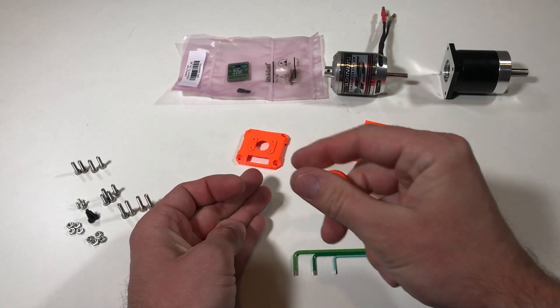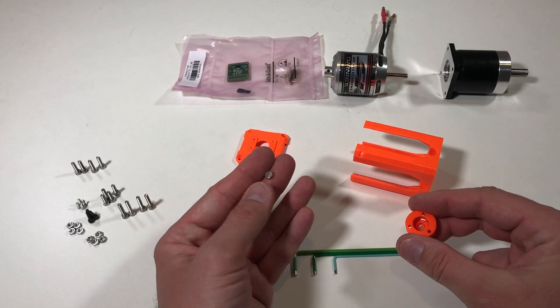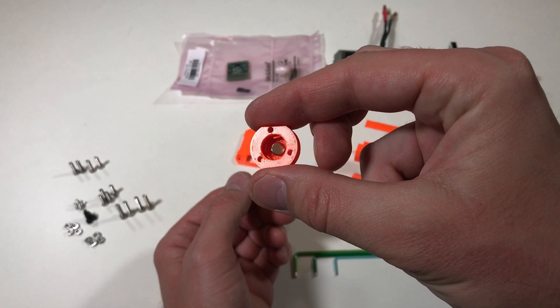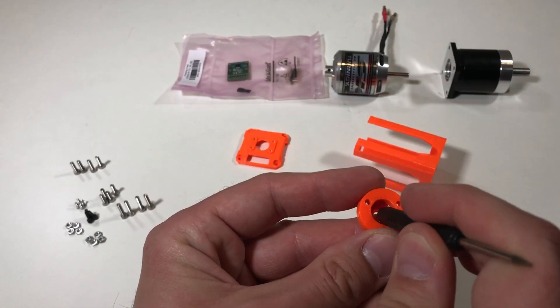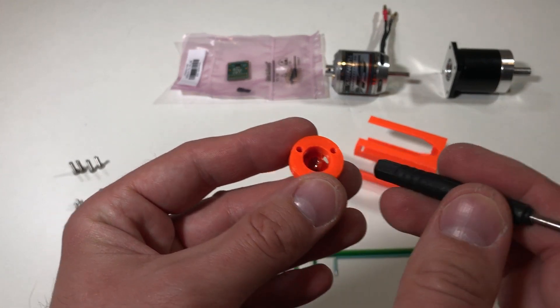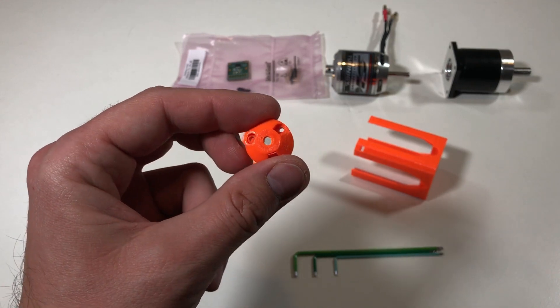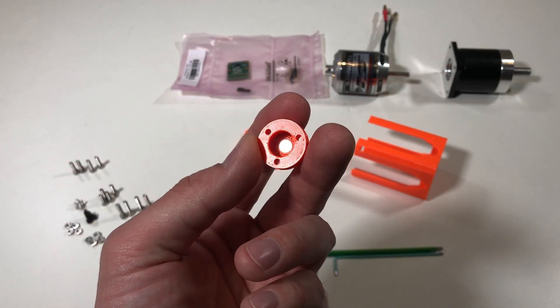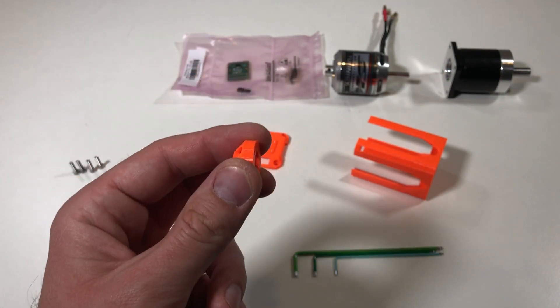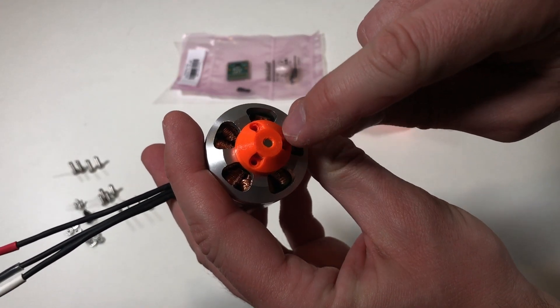I'm going to start with this small piece to hold the magnet. First of all we need to push fit the magnet inside. I'm going to push it with this screwdriver with a plastic part. So the magnet is in. You see the part of this magnet through this hole. This is how it looks from the other side. And now this one goes on the back of the motor.